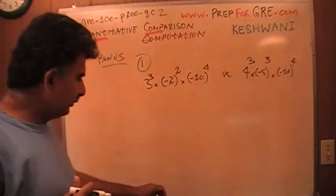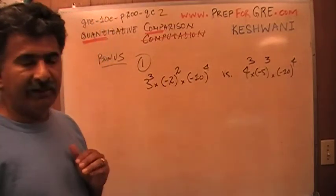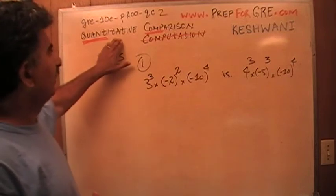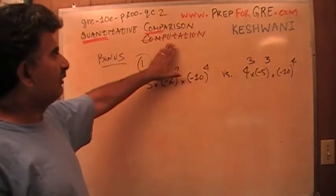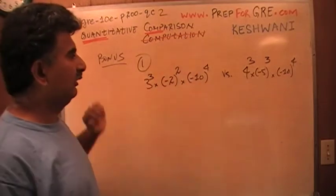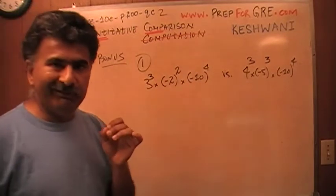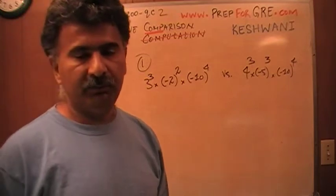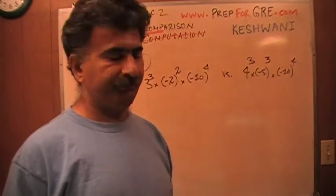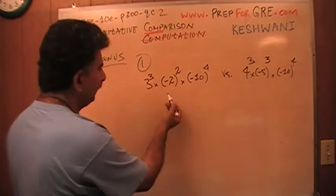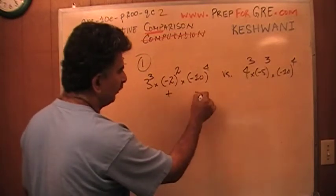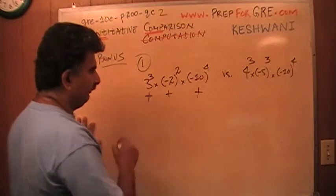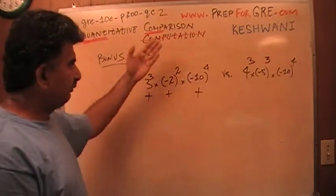Anyway, so what did you do? What I want you to realize is the fact that these questions are called quantitative comparison. These are not called quantitative computation, which is why I wrote down computation and crossed it out to emphasize that one is not expected to compute the two quantities. One is expected to compare them. What you have to realize here is that negative 2 raised to 2nd power, this is a positive quantity. Negative 10 raised to 4th power is a positive quantity. This whole thing is positive.